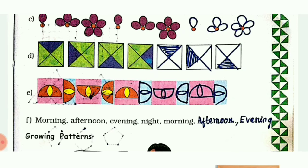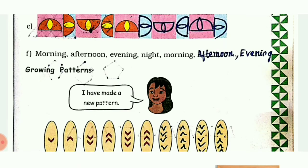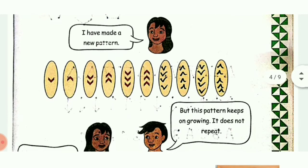Next is a growing pattern. Here is a pattern where one symbol is V turned upwards, and the second symbol is an inverted V turned downwards. Again and again this is getting repeated, but with the design increasing each time.